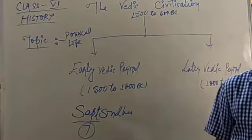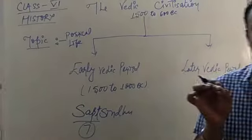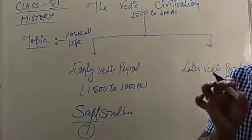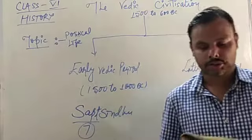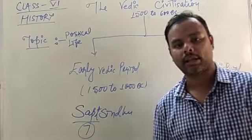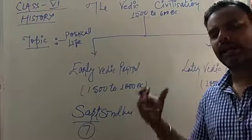The early Vedic age is also called Rig Vedic age. Why is it called Rig Vedic age? The reason is because the Rig Veda was composed at this time. There are four Vedas: Rig Veda, Yajur Veda, Atharva Veda and Sama Veda.